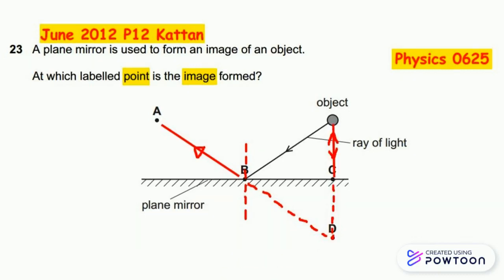I draw a perpendicular incident ray from the object to point C, then the reflected ray along the same path as the incident. From point C to point D, I draw an extension for the reflected ray.